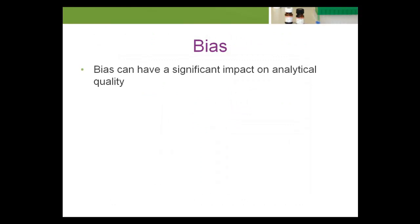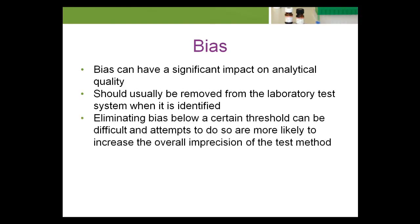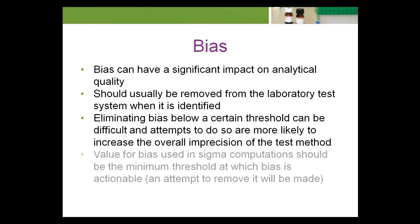Bias can have a significant impact on analytical quality and should usually be removed from the laboratory test system when it is identified. However, eliminating bias below a certain threshold can be difficult, and attempts to do so are more likely to increase the overall imprecision of the test method. In general, the value for bias used in sigma computations should be the minimum threshold at which bias is actionable — that is, the level at which an attempt to remove it will be made.